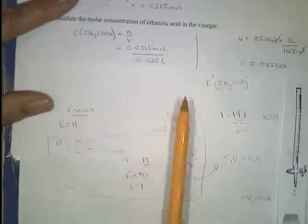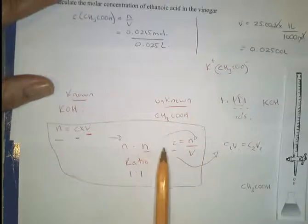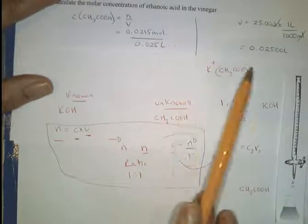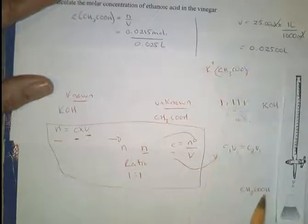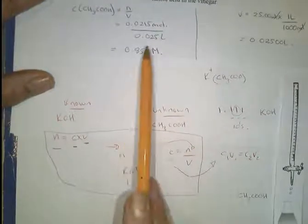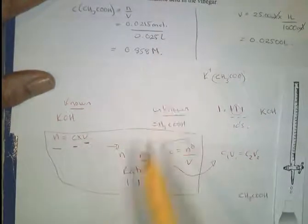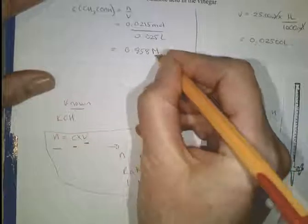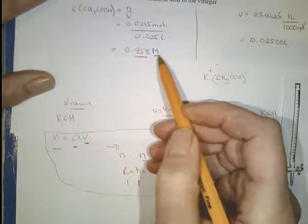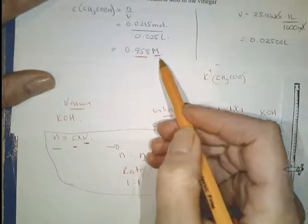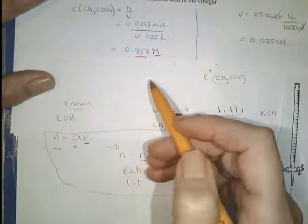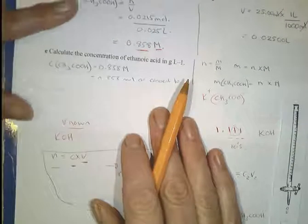Then once you know the number of moles of the known one, what you're trying to find, then you just find the concentration. Make sure you converted your titer, the volume down here, converted it into liters, and make sure you write your units and the correct number of significant figures. So you could get multiple marks. If they were marking this one for units, you would get a mark for writing the units. If they were marking this one for significant figures, you'd get a mark for significant figures.